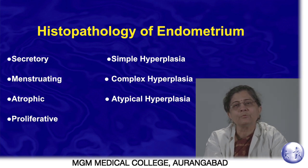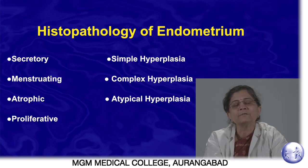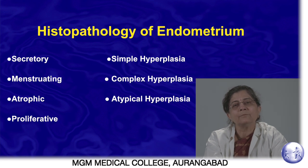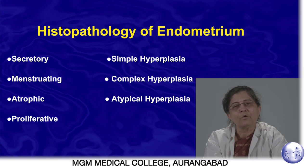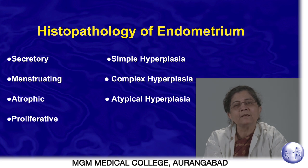We are not considering postmenopausal bleeding here, as biopsy is mandatory in that setting. DUB is a disease of the reproductive system. When a patient around 40 years or beyond presents with a change in her menstrual pattern, biopsy is indicated. This biopsy should be done in the premenstrual phase, to determine whether proliferation has occurred, whether it is excessive, whether ovulation has taken place, and whether any other endometrial abnormality is present.